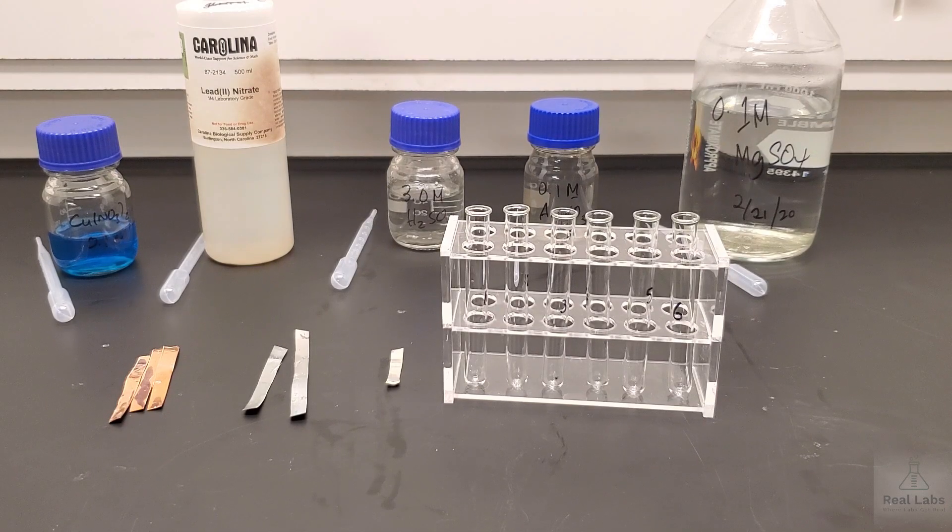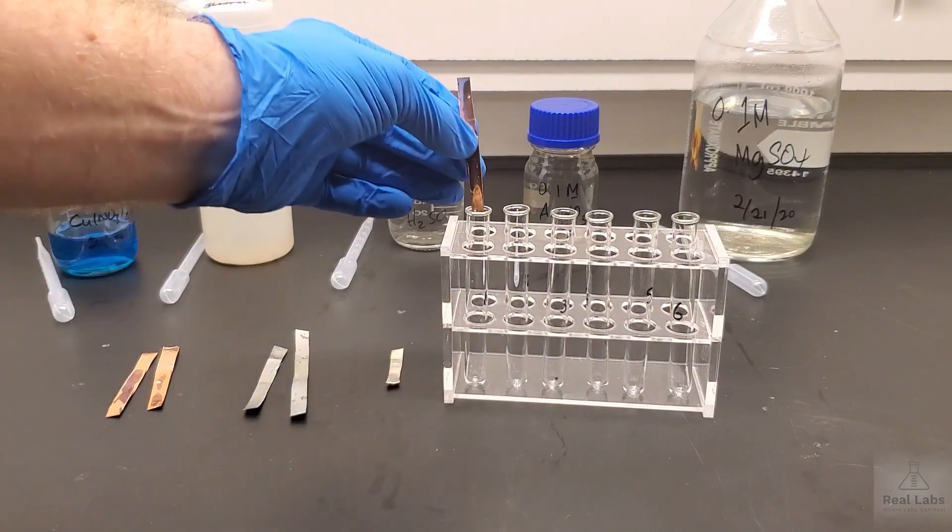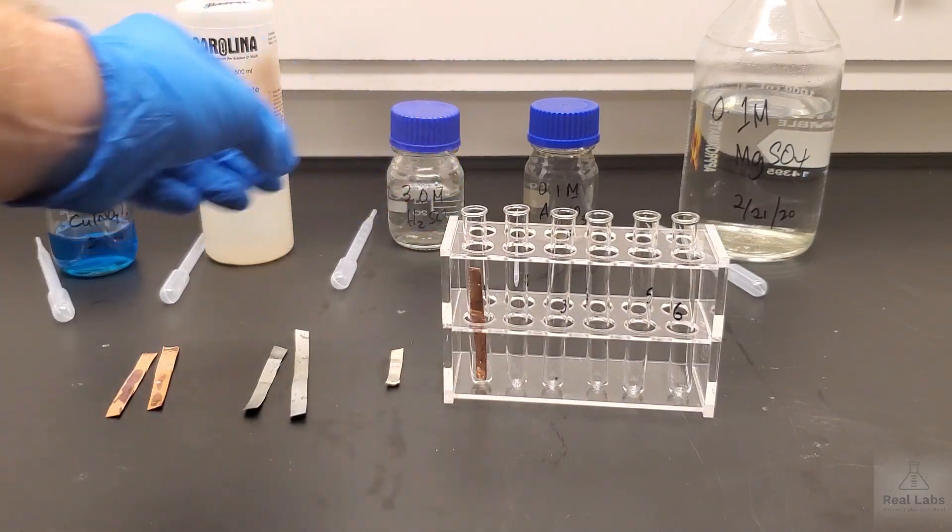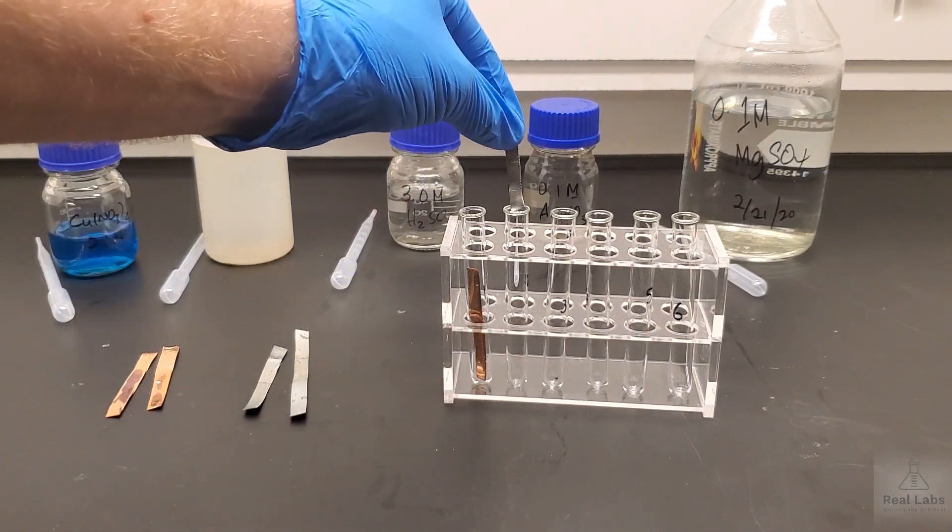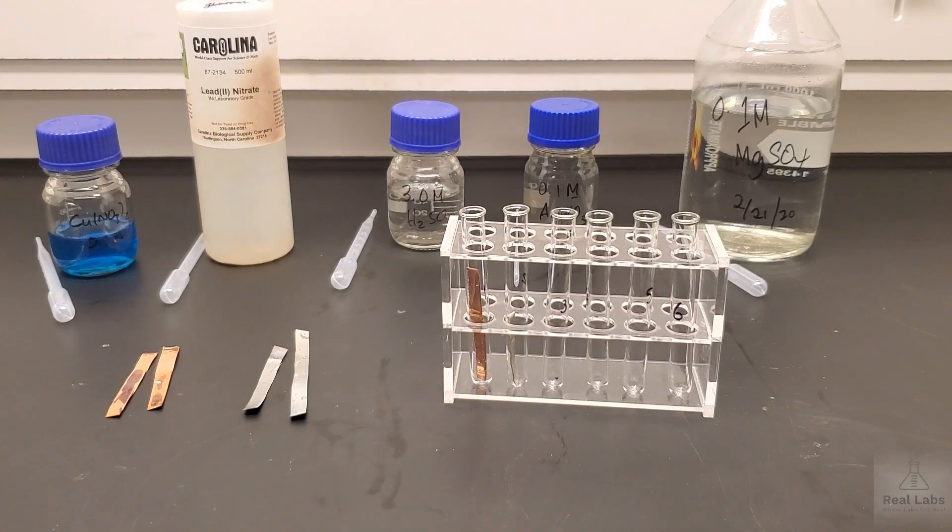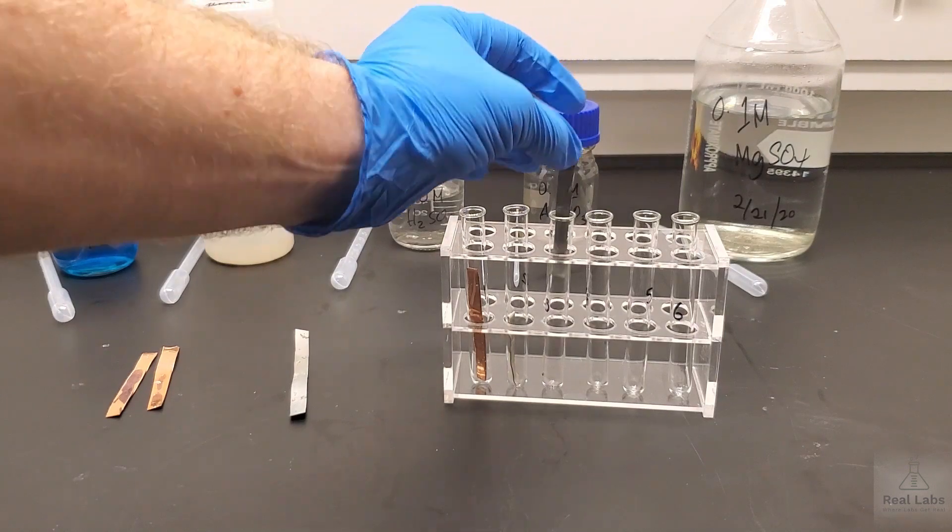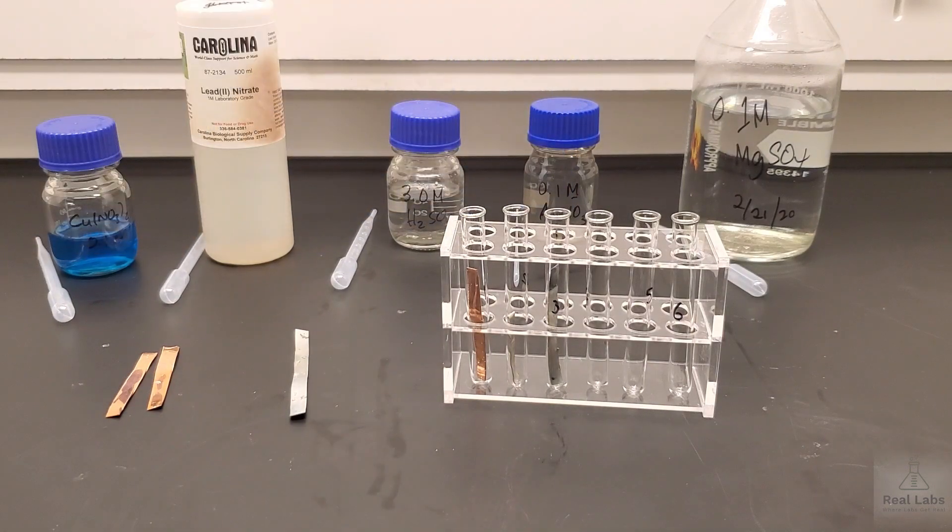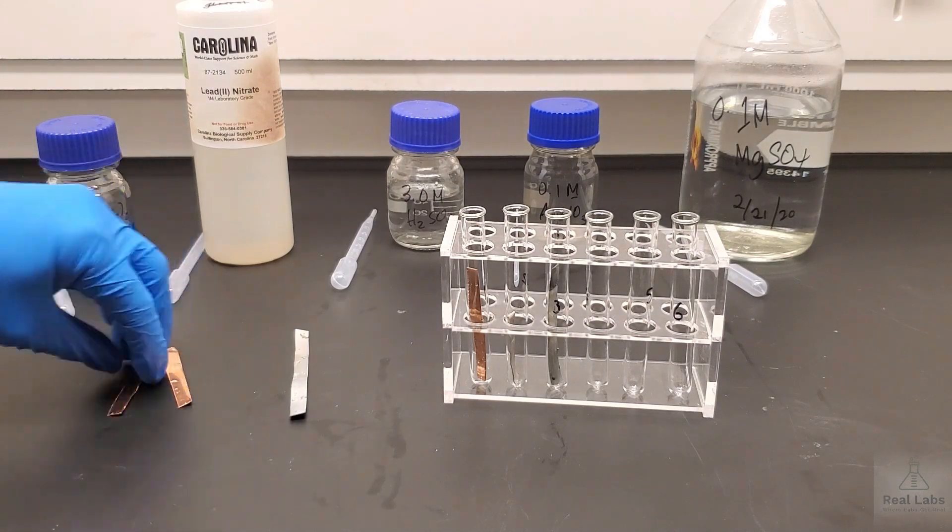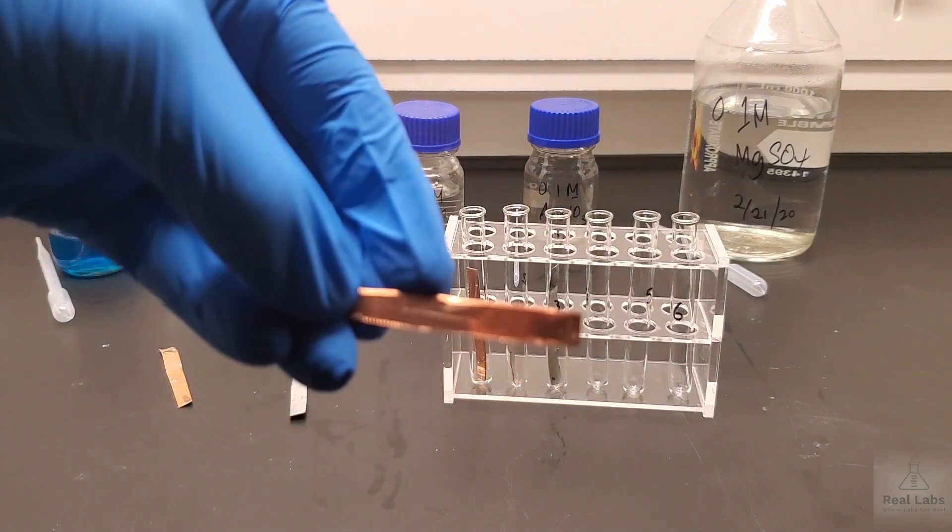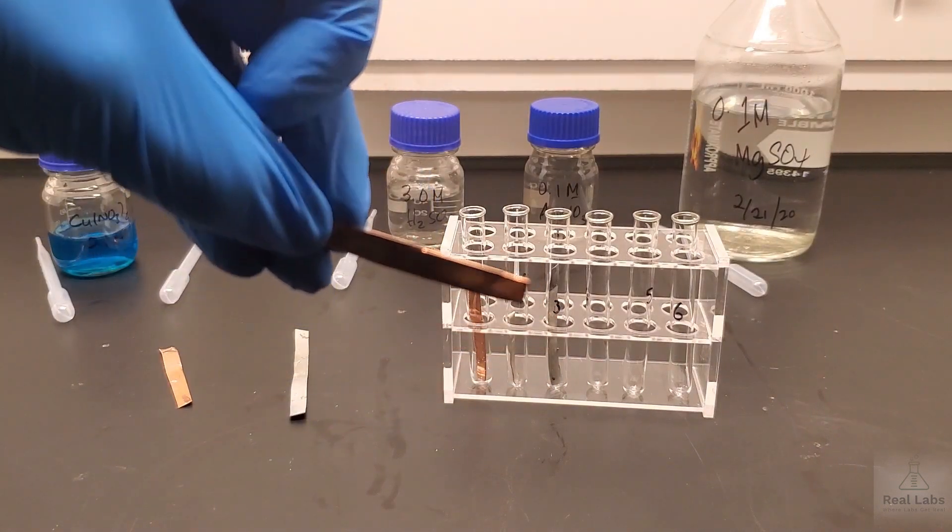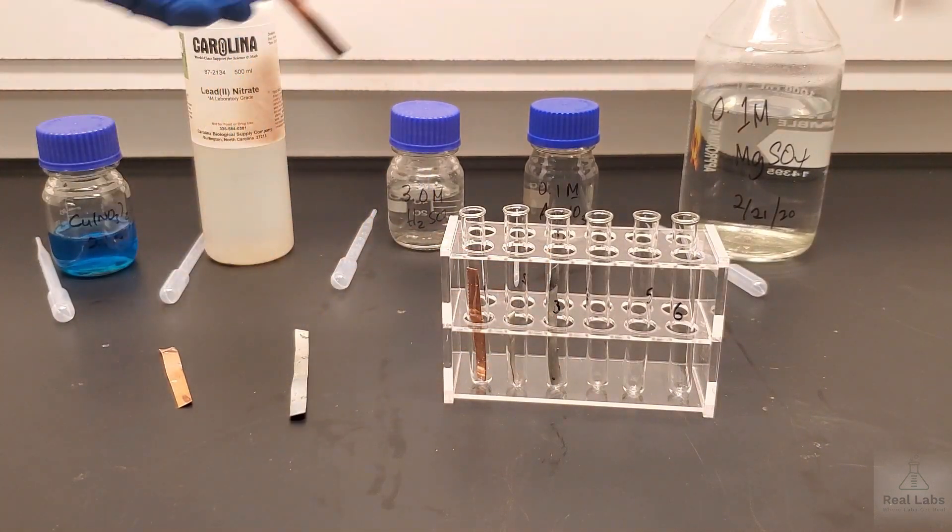In the first test tube, we're going to add a copper strip. Into the second test tube, we're going to add our lead strip. Into our third one, we're going to put a zinc strip. Just so you know, the ends of these I've already buffed out and polished up a little bit, to make sure they're nice and clean so that if a reaction does occur, it occurs very readily. For example, if you look at the end of this copper strip, it is pretty shiny.